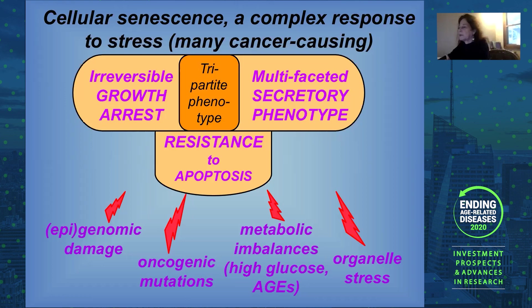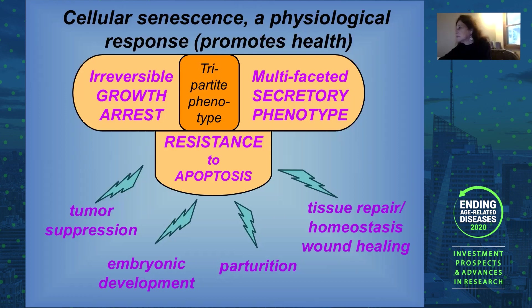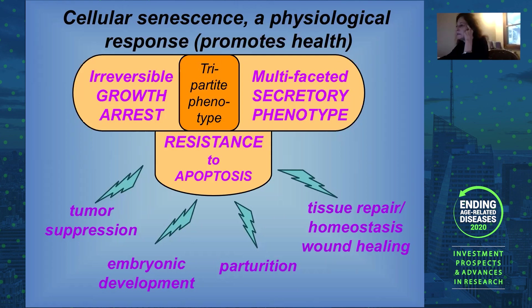Yet there is a different way of viewing this tripartite phenotype: it is also a physiological response that has been under evolutionary pressure. The growth arrest is extremely important for suppressing the development of cancer — we know this because humans and mice defective in genes that cause cells to arrest die in early deaths due to cancer. In addition, there's growing evidence that the secretory phenotype helps fine-tune structures important for embryonic development, with a wave of senescence in the placenta prior to labor, and it's also important for tissue repair and wound healing.